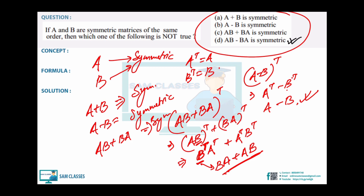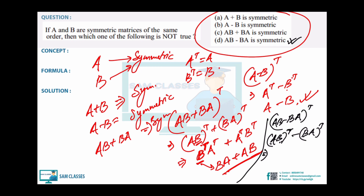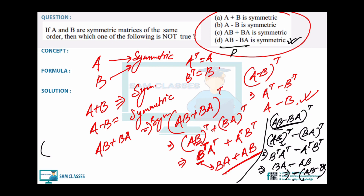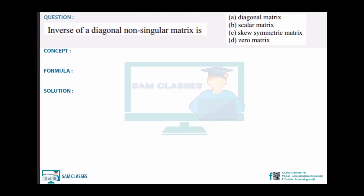Since the first three options are all symmetric, the fourth must be the answer. Checking AB - BA: (AB - BA)-transpose = (BA) - (AB) = -(AB - BA). Since the transpose equals the negative of the matrix, it is skew-symmetric, not symmetric. So AB - BA is skew-symmetric — that's the option that is NOT symmetric.